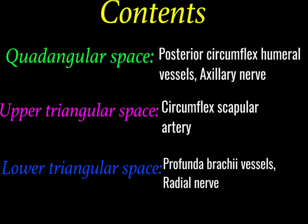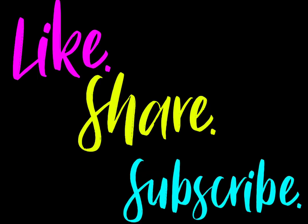Seeing the contents again: the quadrangular space contains the posterior circumflex humeral vessels along with the axillary nerve. The upper triangular space contains the circumflex scapular artery. The lower triangular space contains the profunda brachii vessels along with the radial nerve. Remember that the quadrangular space has the axillary nerve and the lower triangular space has the radial nerve.